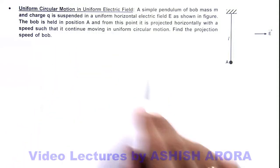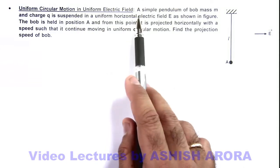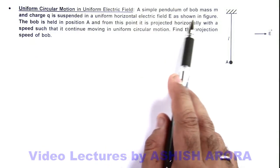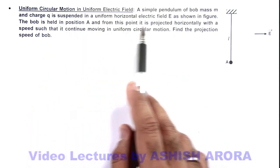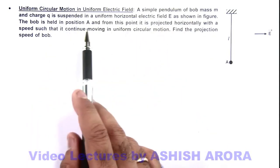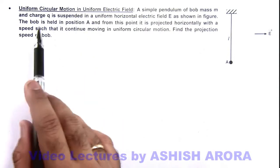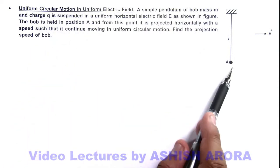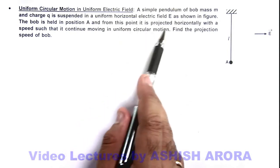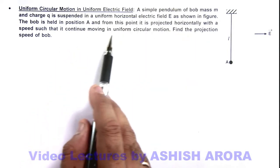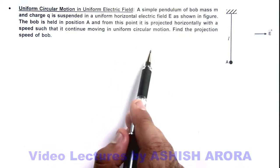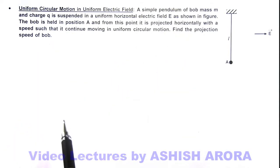Here we are given a situation in which a simple pendulum of bob mass m and charge q is suspended in a uniform horizontal electric field E as shown in figure. The bob is held in position A and from this point it is projected horizontally with a speed such that it continues moving in uniform circular motion. We are required to find the projection speed of this bob.